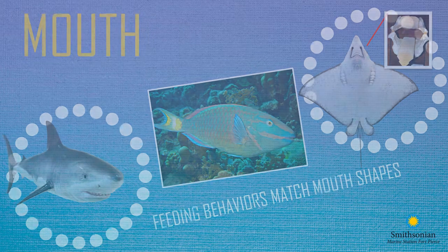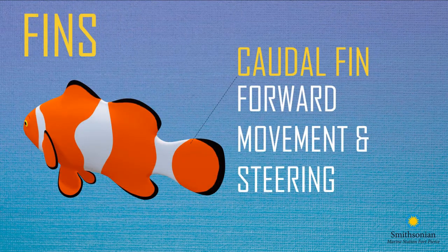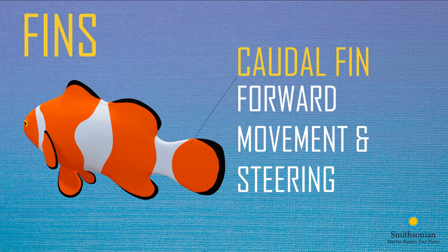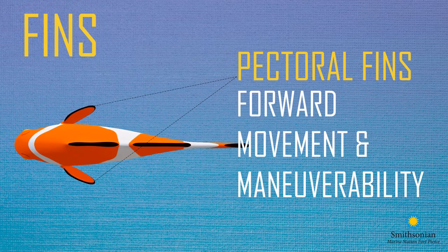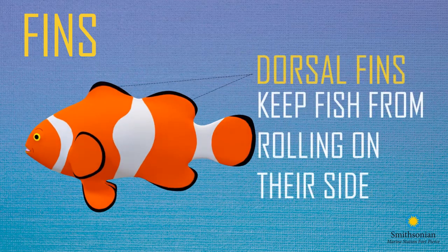Now let's start discussing fins. The tail end of a fish is called the caudal fin. Just like our human feet allow us to jump, run forward, and swim, the caudal fin helps fish move forward and steer from side to side. Moving towards the anterior end of the body, we find a pair of pectoral fins — these would be equivalent to your human arms. Pectoral fins help fish maneuver and move forward.